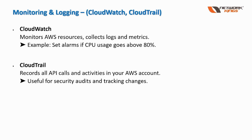CloudTrail is an incredible service. In CloudTrail you can see the last 90 days of event history — for example, if somebody is logging into your AWS account, creating machines, terminating machines, or making changes in the AWS account. Such logs are stored in CloudTrail. You can record all API calls and activities in your AWS account, which is useful for security audits and tracking changes.